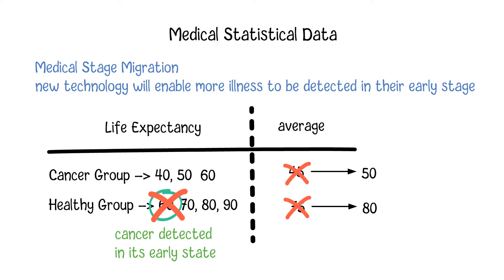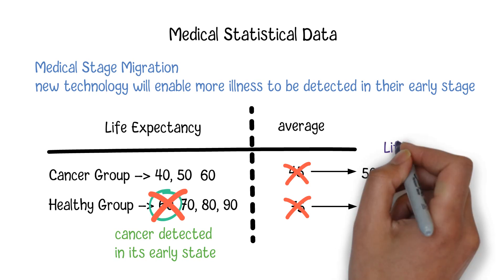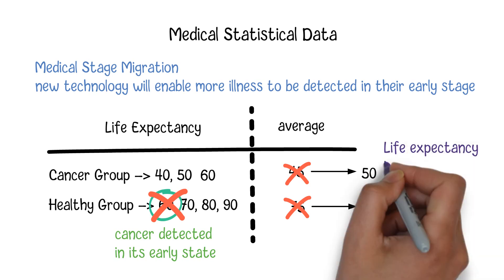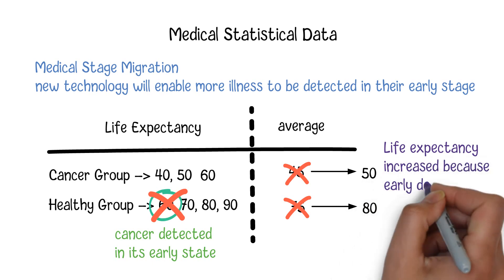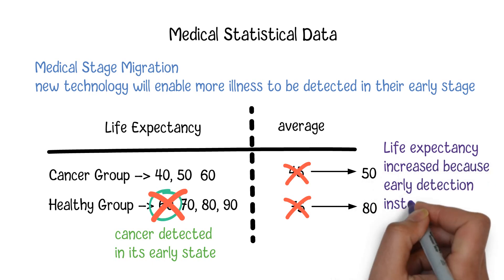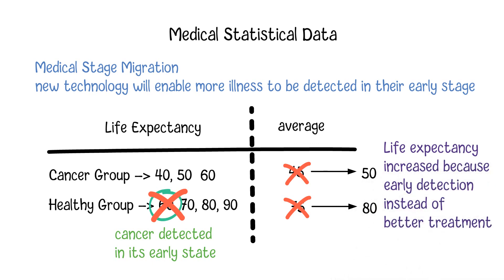From this example we can see the lifespan statistics before and after a stage migration use different meanings of 'unhealthy,' as the cutoff for detection is different. Also, if you see some reports saying that the patient group's life expectancy has increased, it might not be because there is a better treatment method. Instead, it might be because some patients are moved from the healthy group to the patient group due to the early detection of the disease.